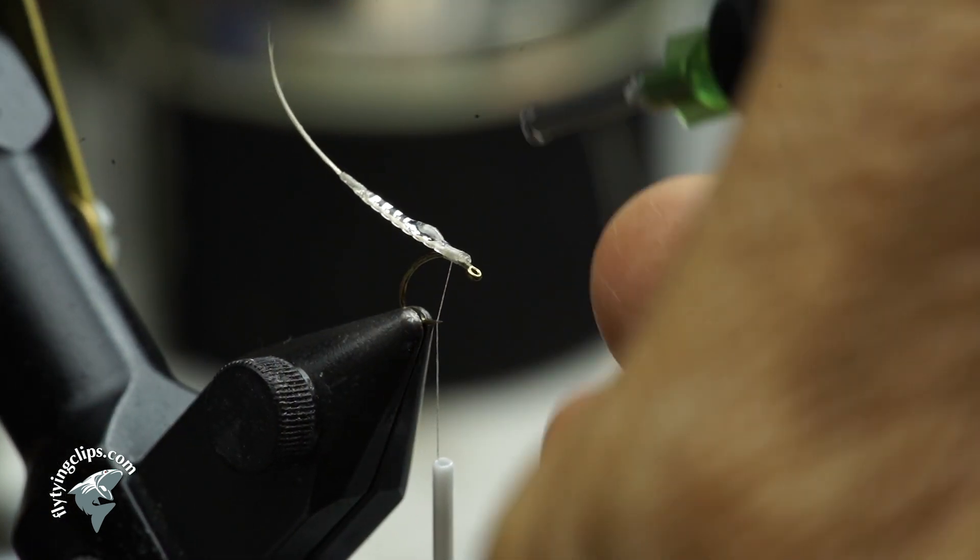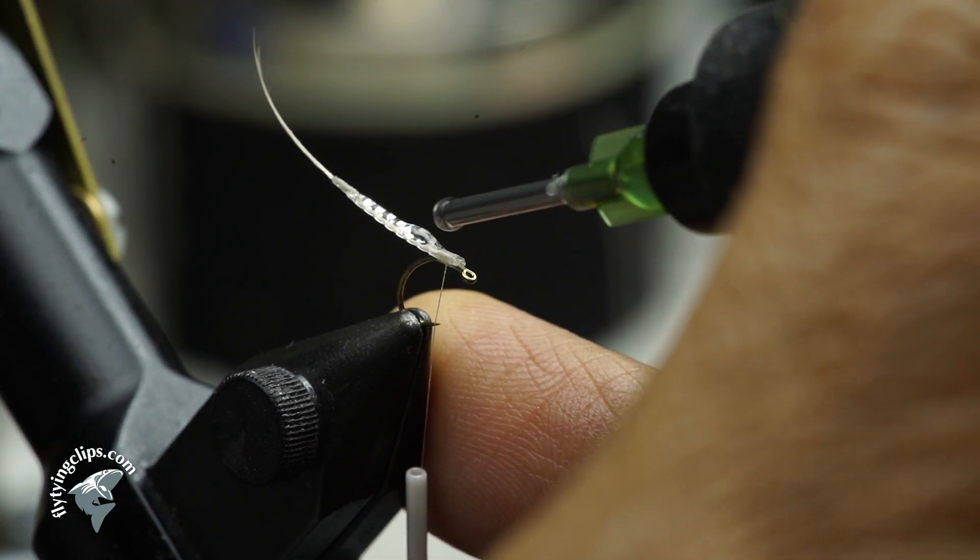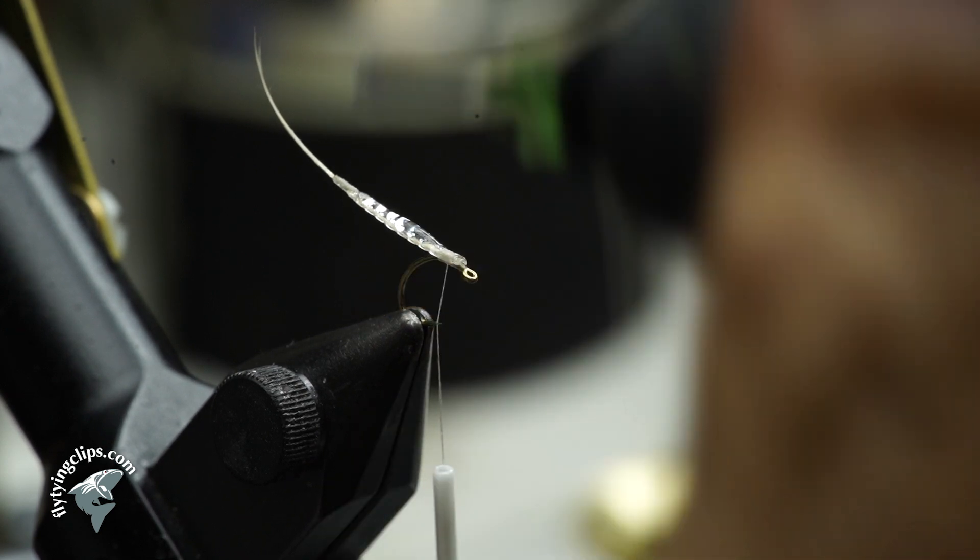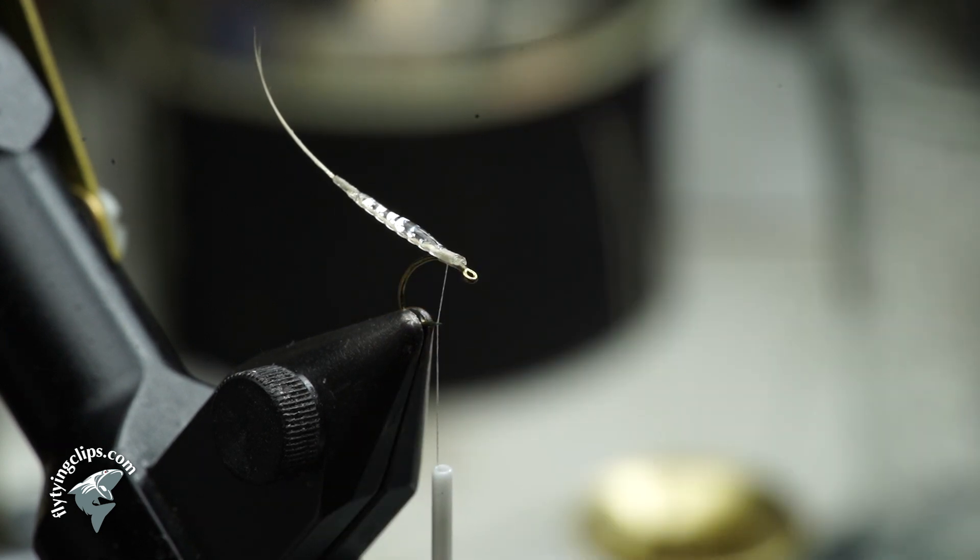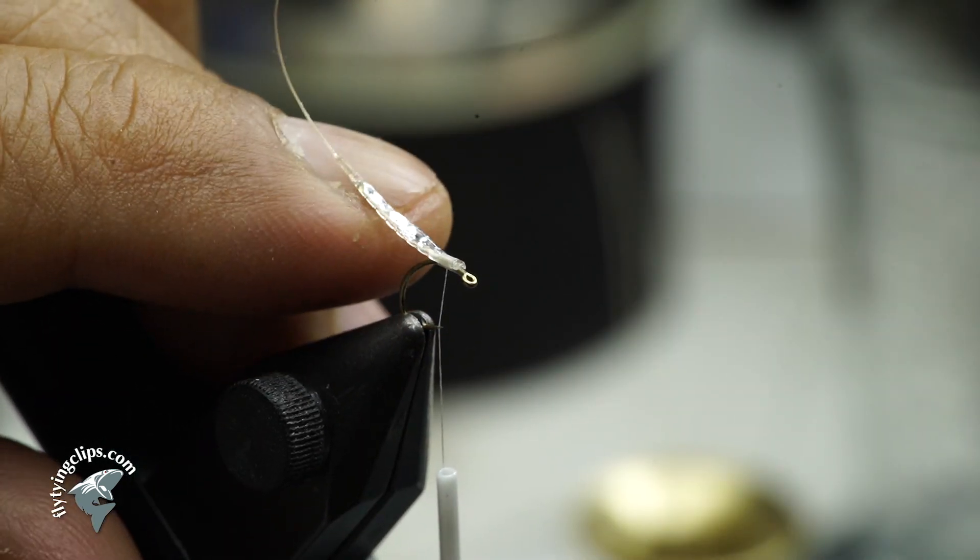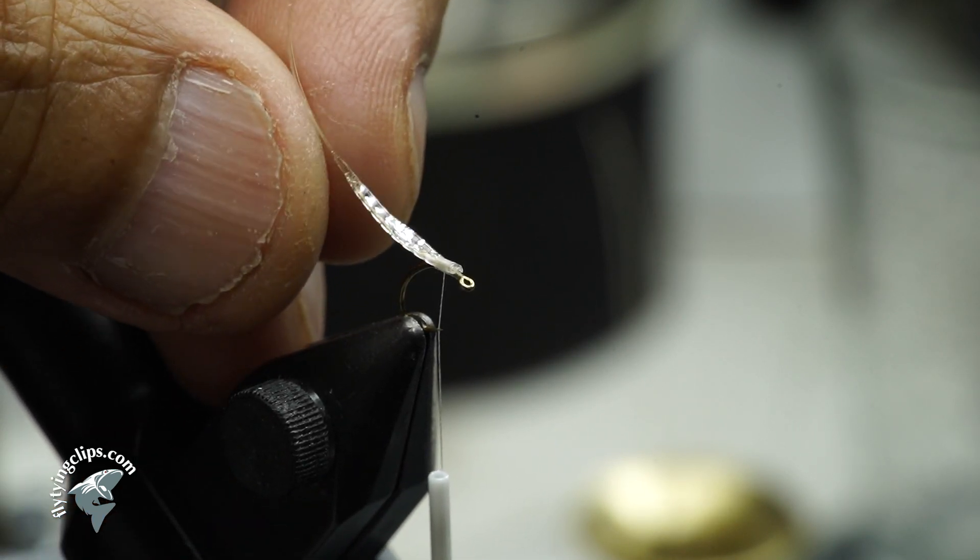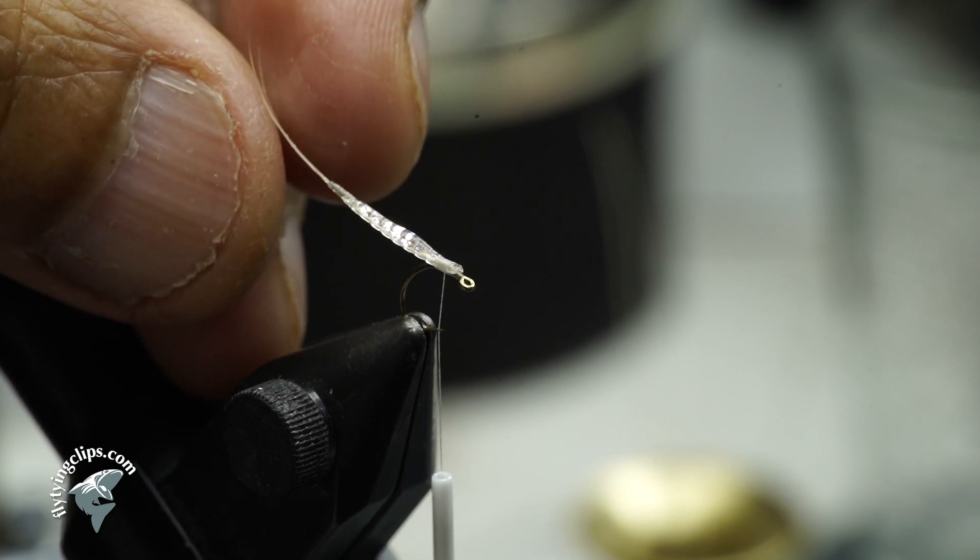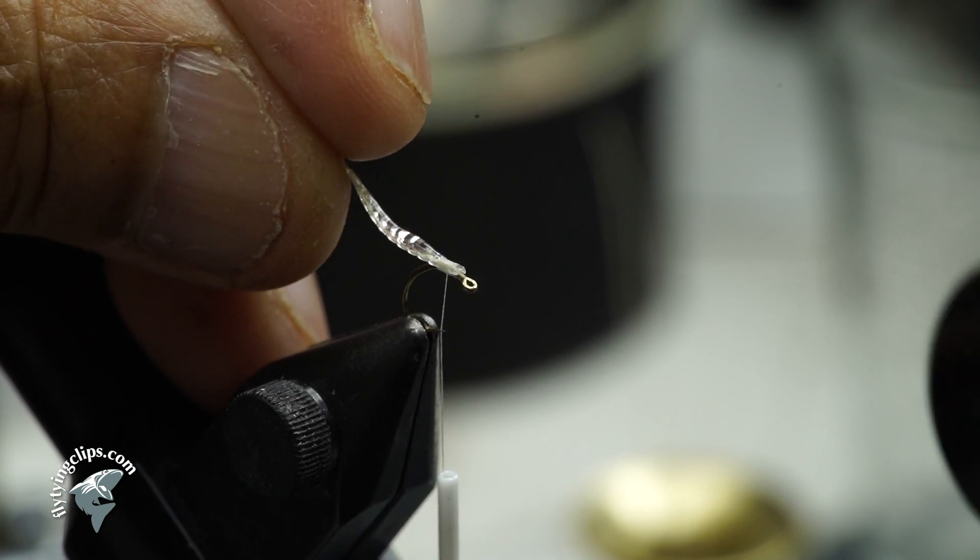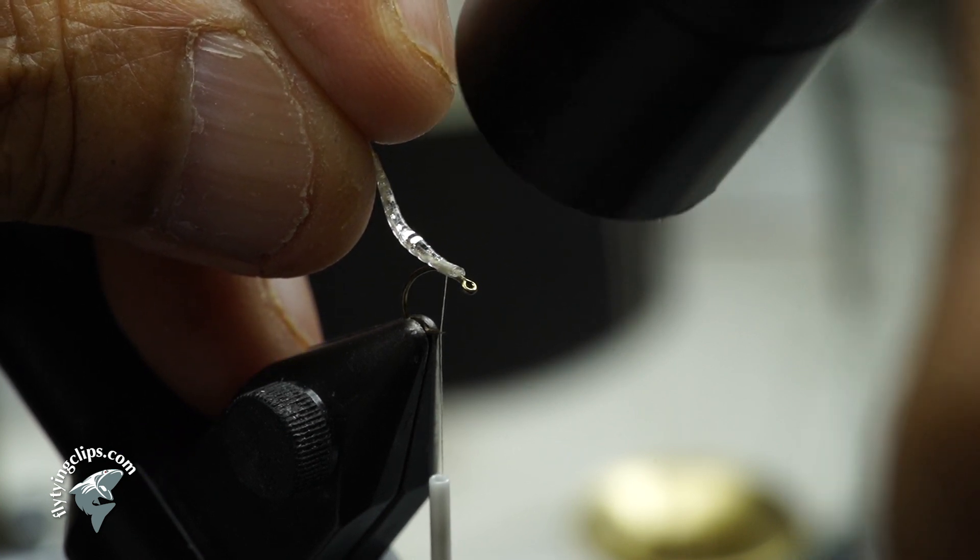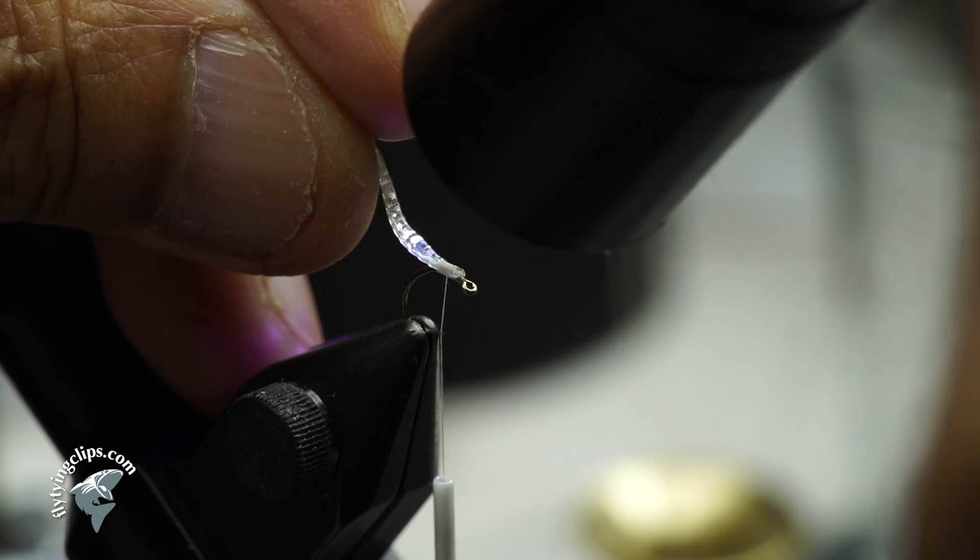And yes there is still air trapped inside that extended body, so it will help with flotation. I like this Loon UV resin because it evens out all by itself. So I'm going to hold that tail and then hit it with my UV curing light.